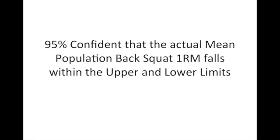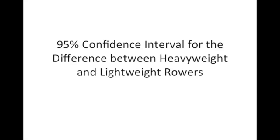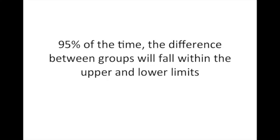Now let's look at the confidence interval for the difference between two means. This time we might take a group of international class heavyweight rowers and also look at a group of international class lightweight rowers, and we'll measure back squat one rep max performance in both groups. We can construct a 95% confidence interval for the difference between the two groups with respect to back squat performance. If we obtain a confidence interval of, let's say, 20 kilograms to 35 kilograms, then that means that 95% of the time the difference between international class heavyweight rowers and lightweight rowers with respect to back squat performance should fall within that range.